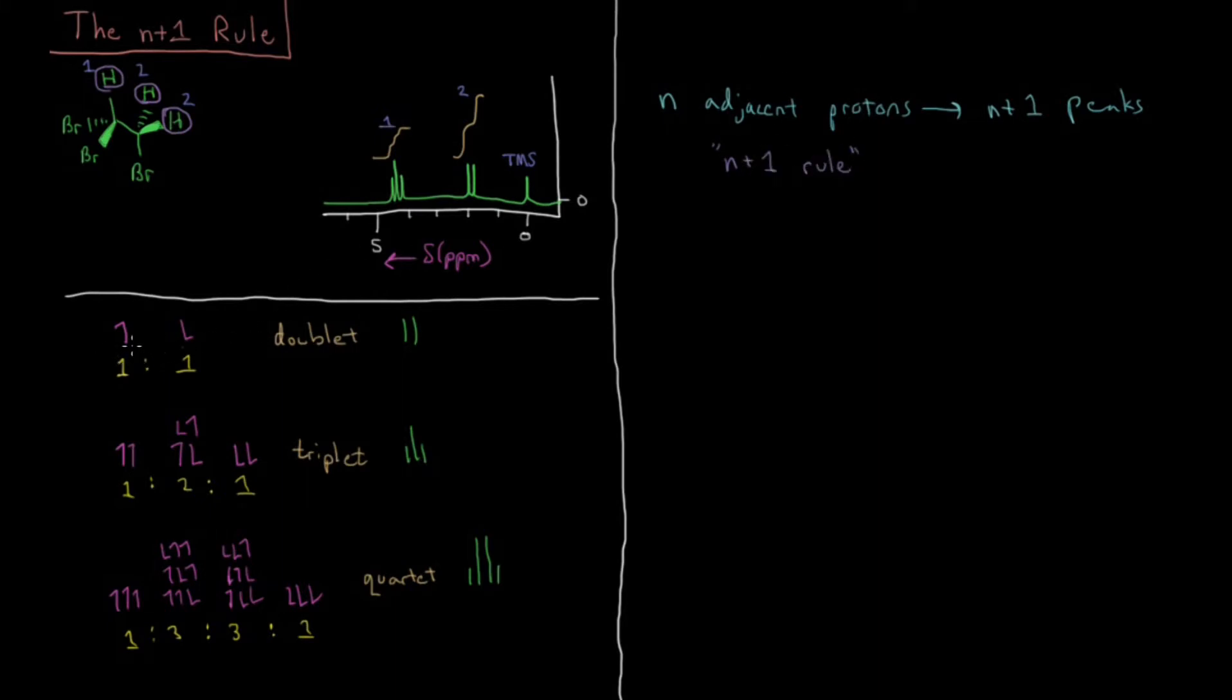Because one proton splits you into two different transition energy levels, two splits you to three, three splits you to four, and so on. The pattern continues. You can go to a quintet 1 to 4 to 6 to 4 to 1, you can go to a sextet 1 to 5 to 10 to 10 to 5 to 1 for those peak ratios for quintet and sextet.